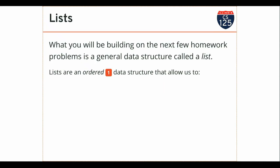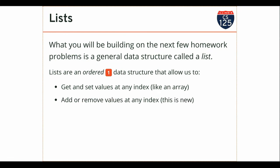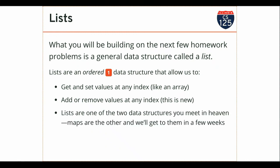Today's homework introduces you to a generalized data structure called a list. A list is a generalization of an array but more flexible — just like an array, I can get and set values at any index, but unlike an array I can add or remove things, meaning it can change size. I can add elements to the end, the beginning, the middle — anywhere in the list. Lists are one of the most useful data structures in computer science and most programming languages support them. We're also going to talk about maps, the other most useful data structure, in a couple of weeks.